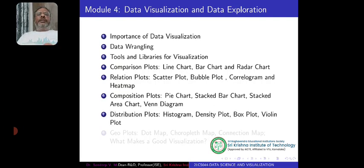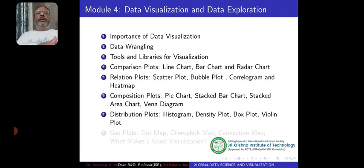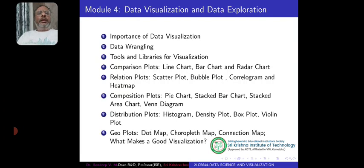We can also talk about distribution plots like histograms, density plots, box plots, and violin plots — examples which explain how the data is distributed. Then there are geographical plots like dot maps, choropleth maps, and connection maps.